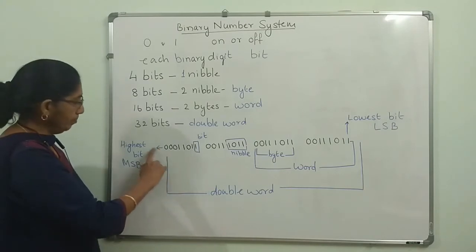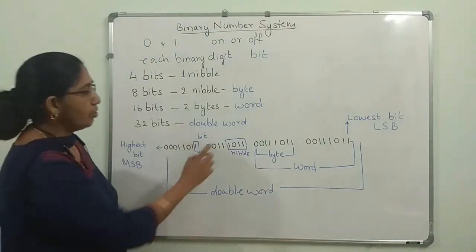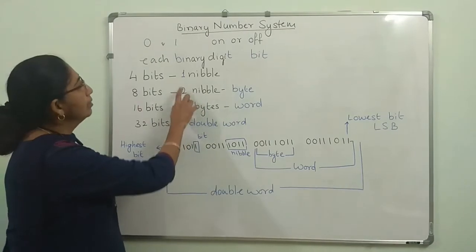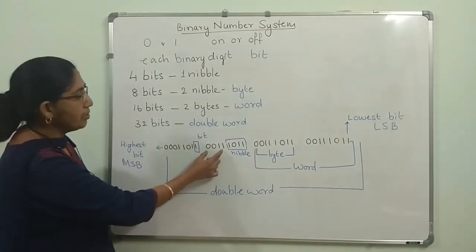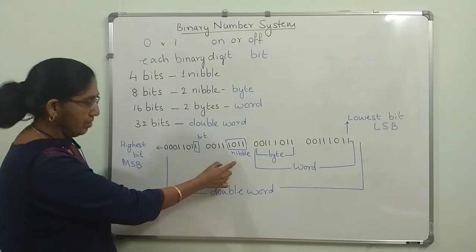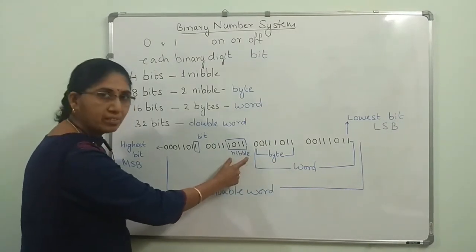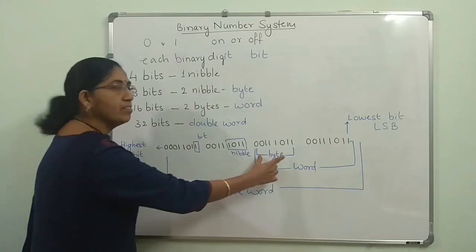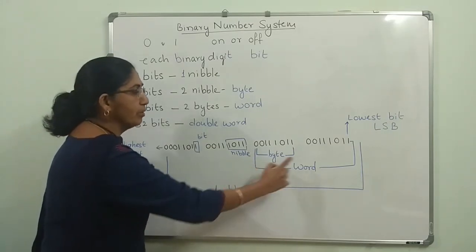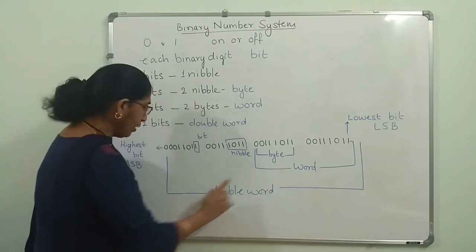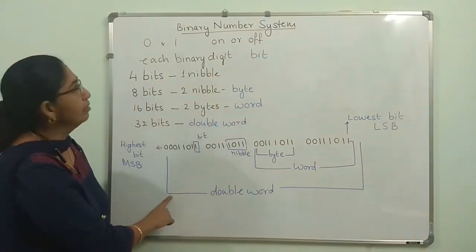So this is how you represent and call these numbers: a single unit is a bit, four such units together is a nibble, eight units is a byte, sixteen units is a word, and thirty-two becomes a double word.